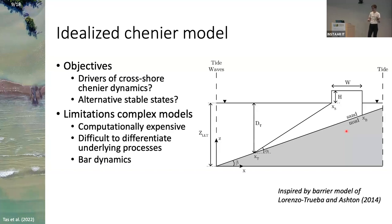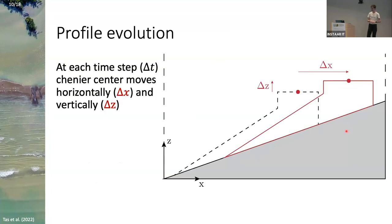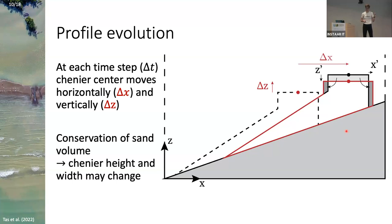Because we know so little of chenier dynamics, we found a hybrid approach: we still use the strengths of process-based models like Delft 3D to calculate migration rates, but our idealized model is really fast for looking at longer timescales. We simplified the profile by representing it as one dot — the chenier center, the middle of the crest. At every time step, that crest center moves horizontally and vertically. Because it's a muddy coastline with just that one body of sand, we assumed conservation of sand volume — so if it moves, it may also change in height and width.